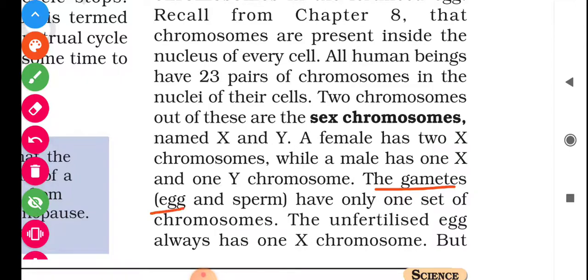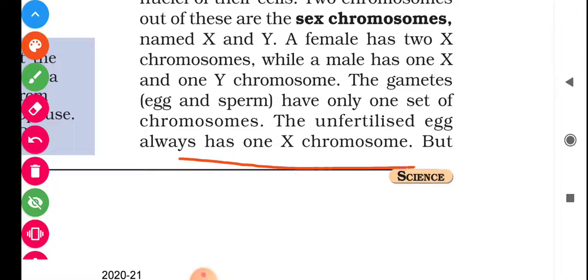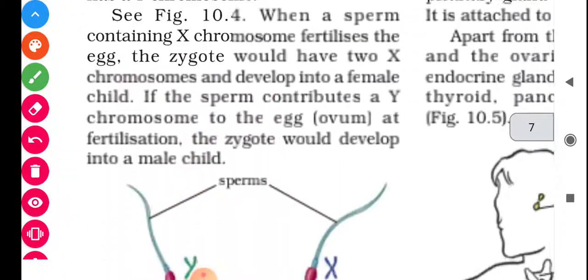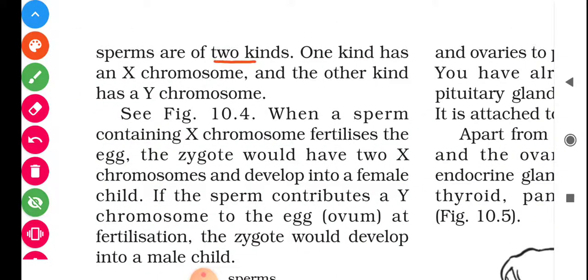The gametes — egg and sperm — have only one set of chromosomes. The egg always has one X chromosome. But sperms are of two kinds: one kind has an X chromosome and the other kind has a Y chromosome. So inside the male's sperm there are two types: one is X and one is Y.